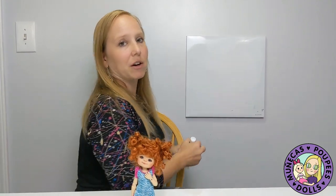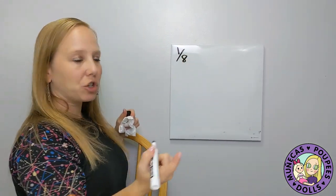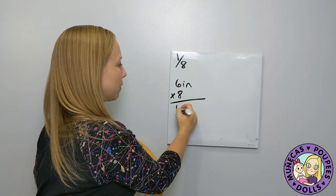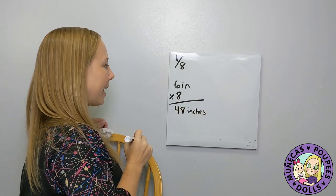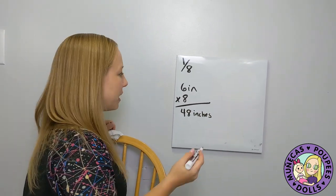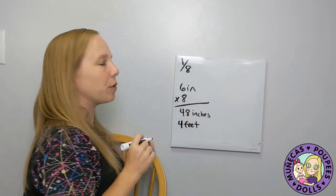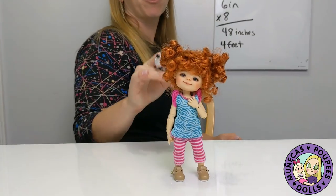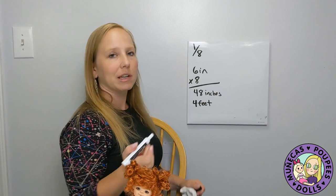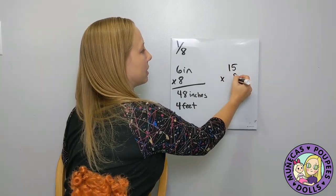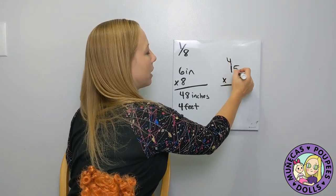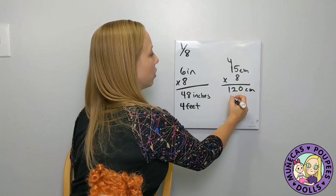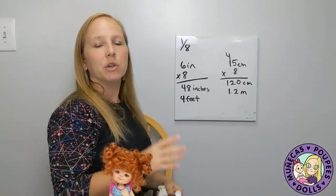This scale is 1/8, so in inches: six inches times eight equals 48 inches, which is exactly four feet tall. In centimeters: 15 times 8 — eight times five is 40, eight times one is 8, plus 4 is 12 — so she'd be 120 centimeters or 1.2 meters in real life.